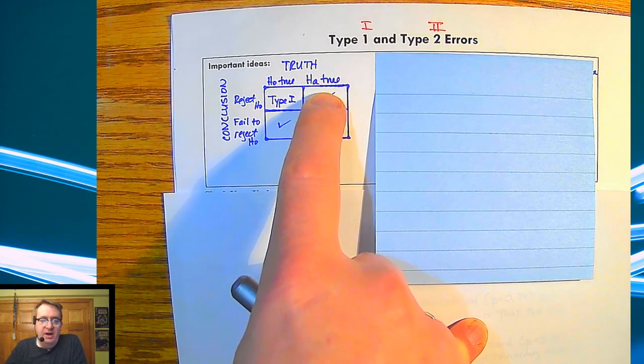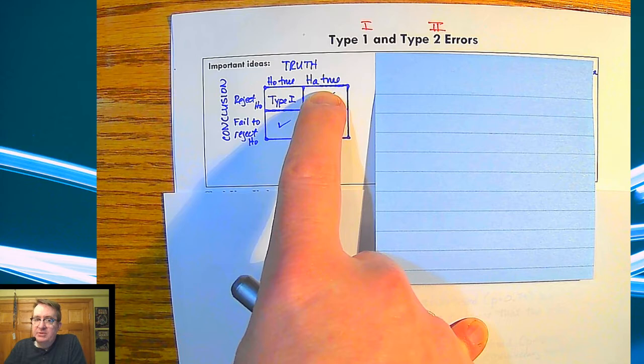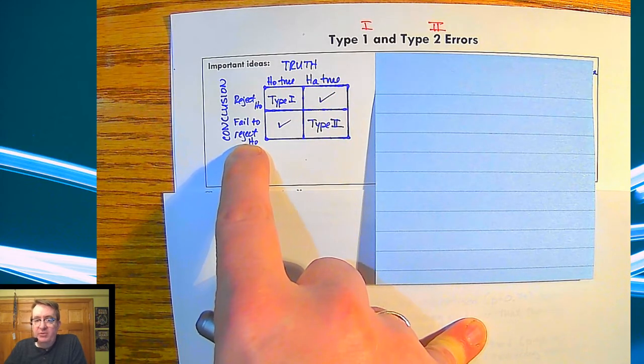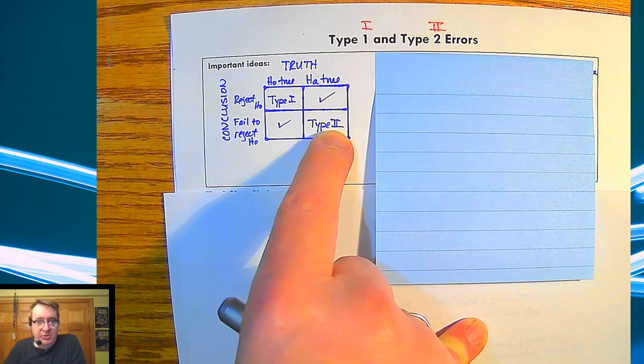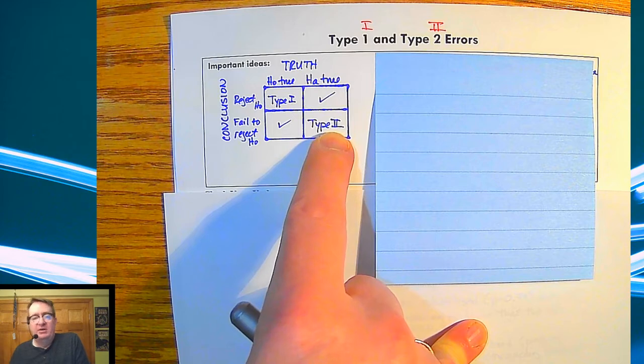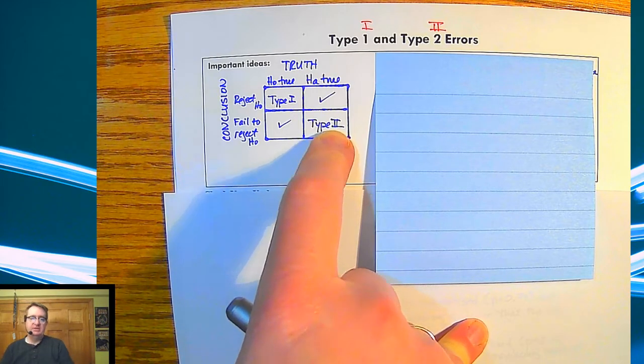However, what happens if the alternative hypothesis is really true and we don't have enough evidence to overturn it? We get a Type II error. There's ways you can go around that—some of it we've talked about, reducing your standard deviation, increasing your sample size, things like that.